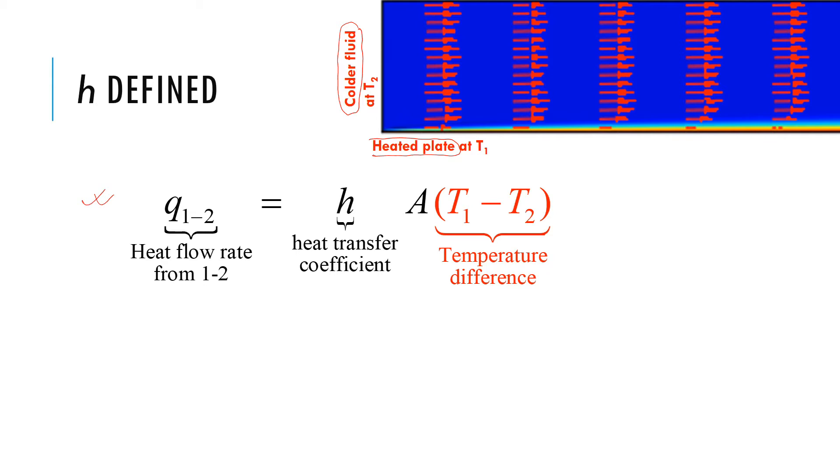1 being the surface and 2 being the fluid, heat flow from 1 to 2 is h times A times T1 minus T2. This we have used.